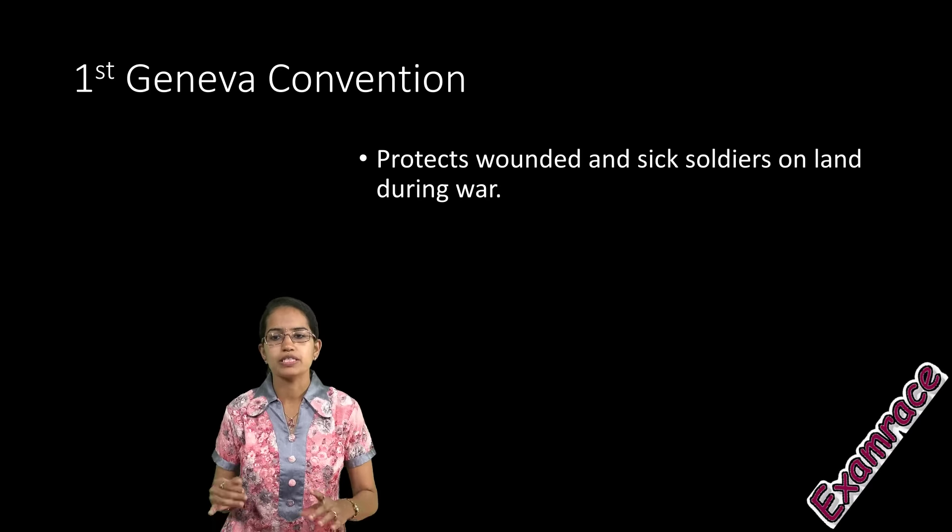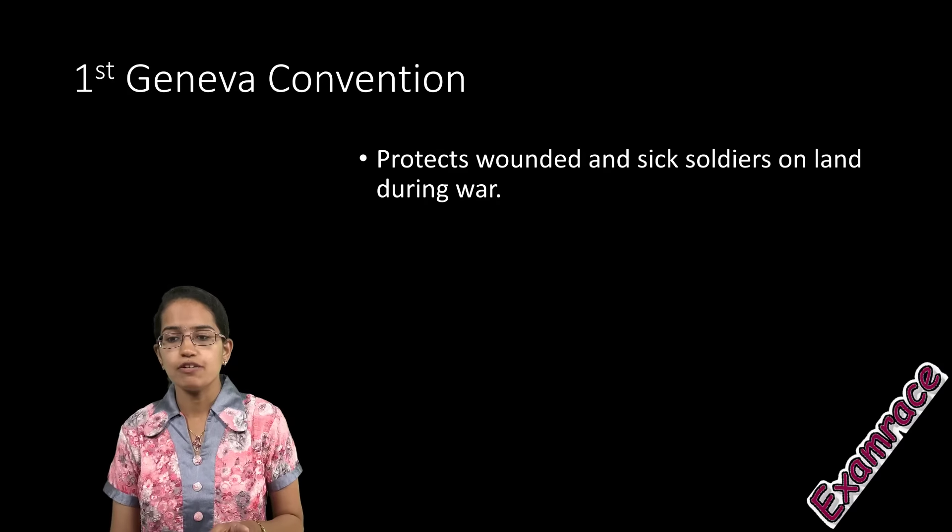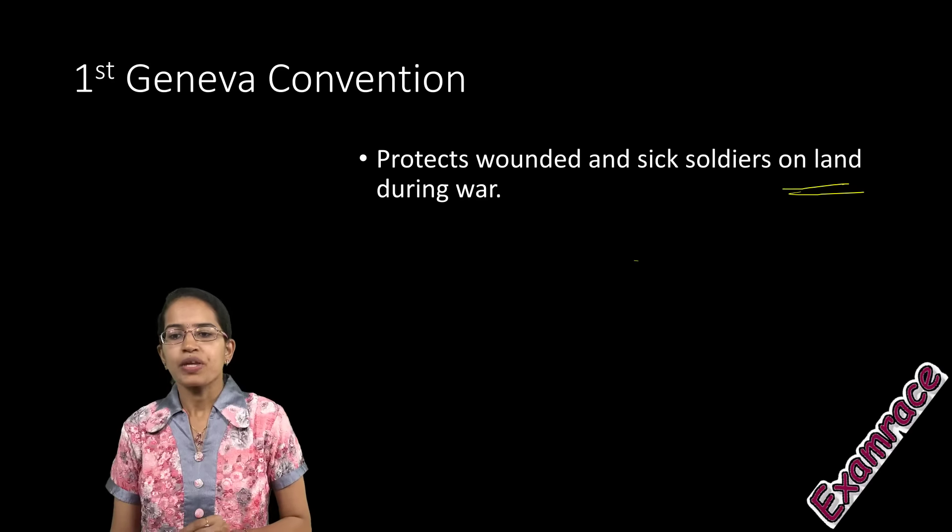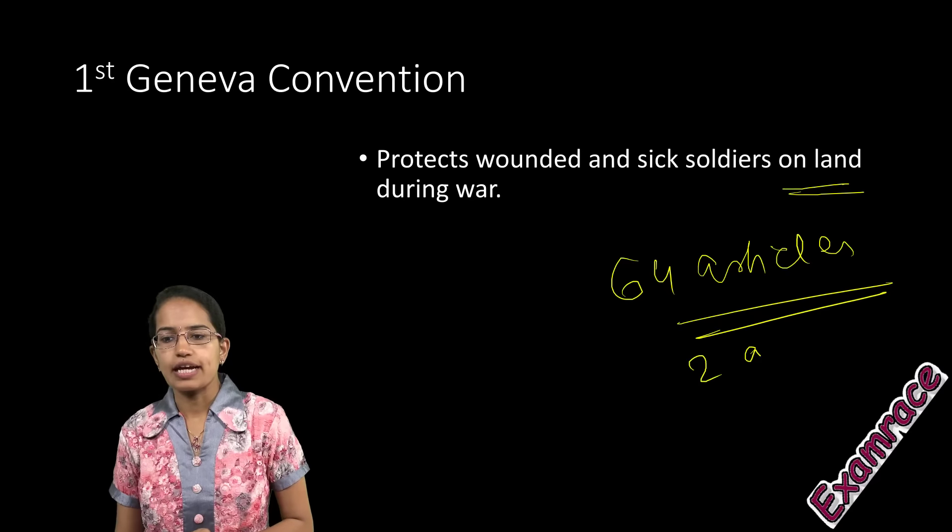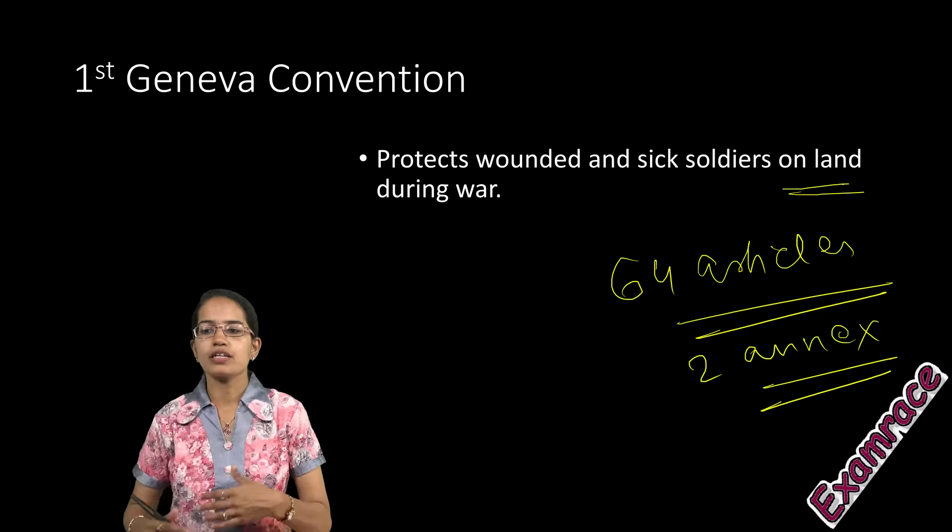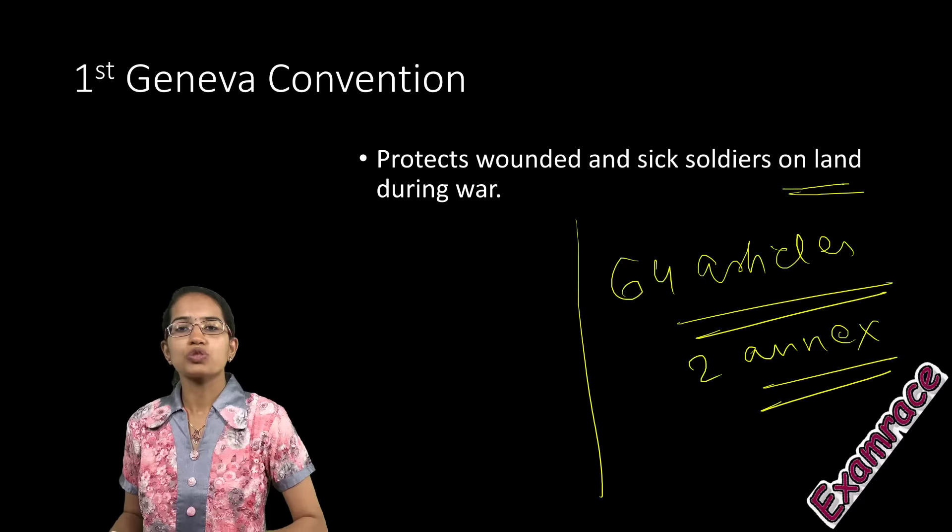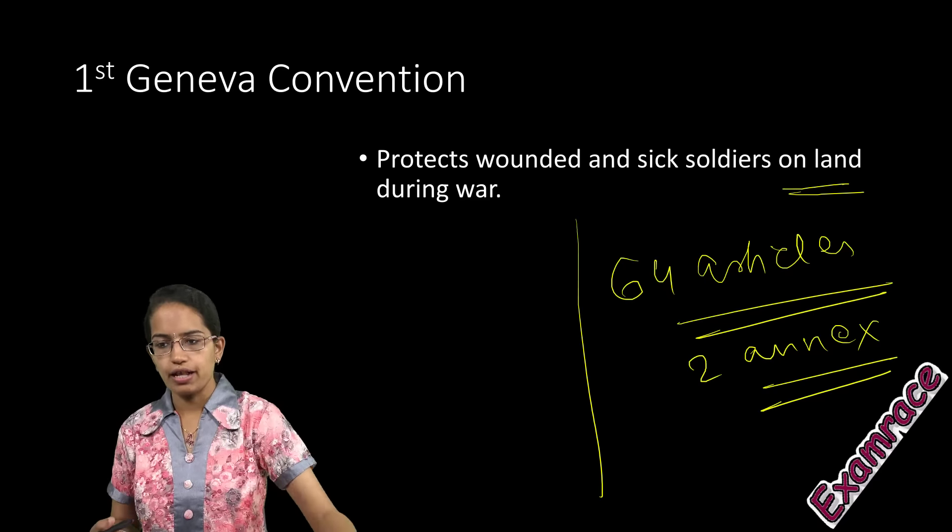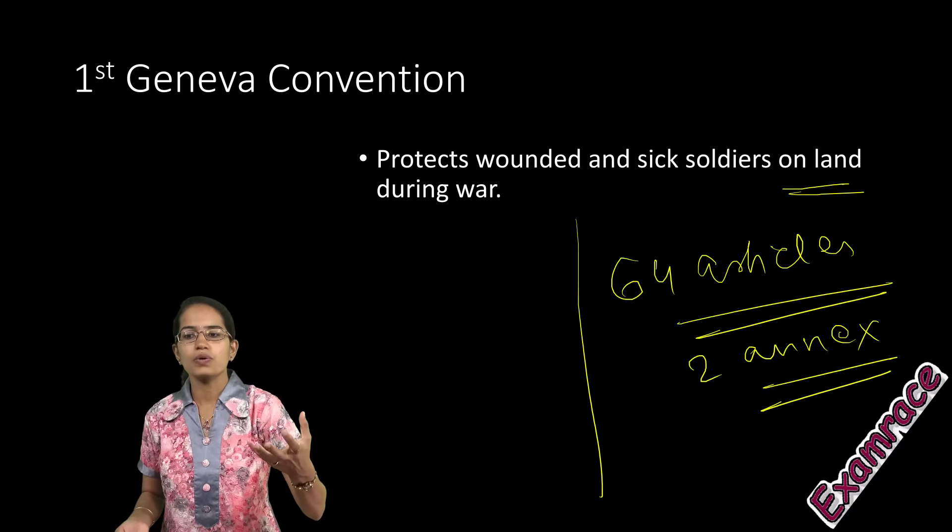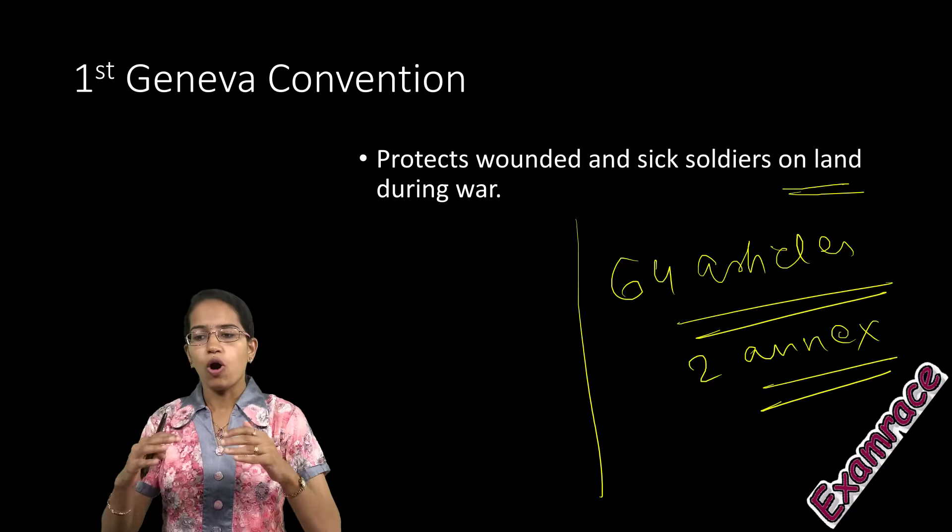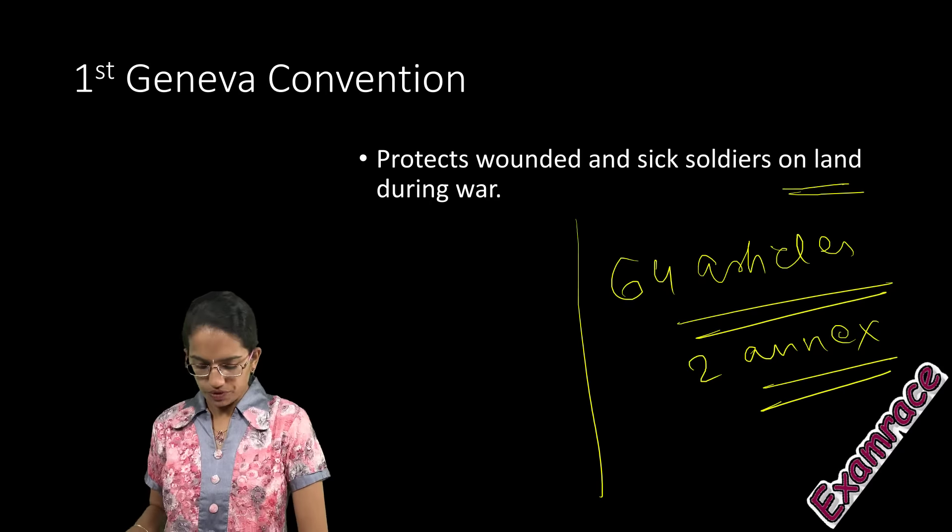The First Convention protects wounded and sick soldiers on land during wartime. It has 64 articles and two annexes relating to hospital zones and protection of individual identity. This includes the wounded, people helping the wounded, and civilians who spontaneously take up arms to protect themselves or repel invasion.